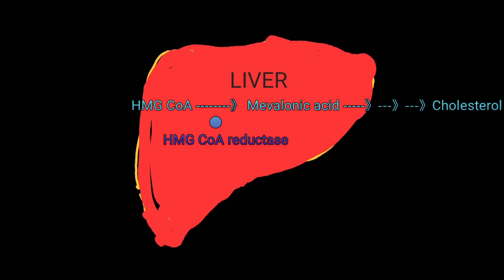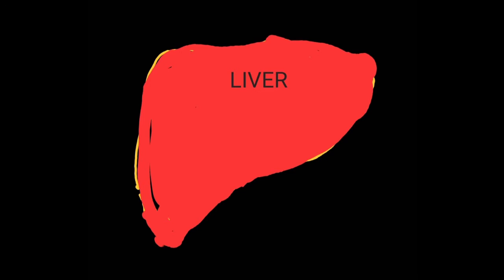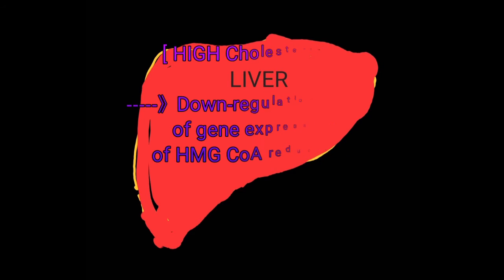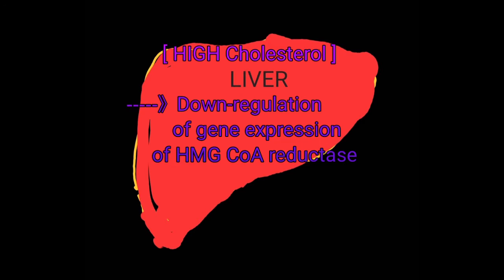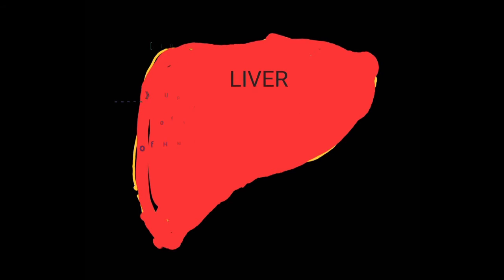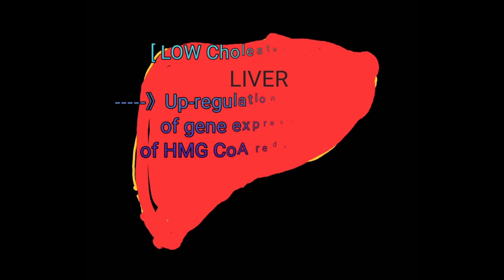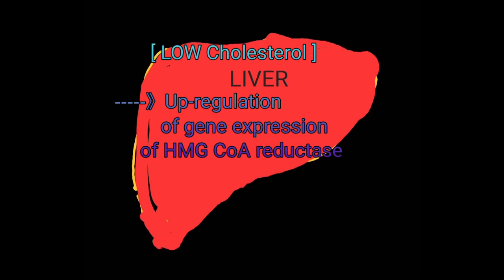A second way cholesterol can regulate the activity of HMG CoA reductase is that the concentration of cytosolic cholesterol inside hepatocytes can regulate the gene expression of HMG CoA reductase in the liver. High concentrations of intracellular cholesterol will down-regulate the gene expression of HMG CoA reductase, and conversely, low intracellular cholesterol will up-regulate the gene expression of HMG CoA reductase.